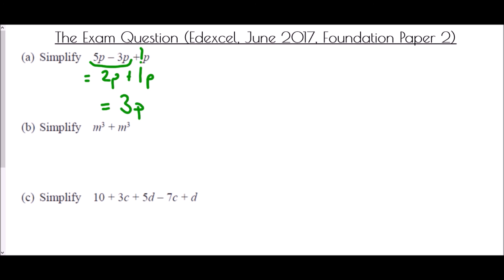In the second part: M cubed plus M cubed. M cubed is exactly the same type of term as the other M cubed. I had one M cubed here and one there, so 1 plus 1 means I have 2M cubed.